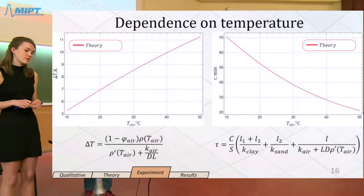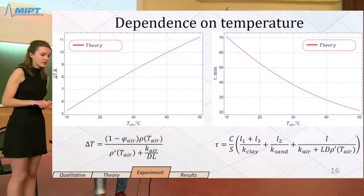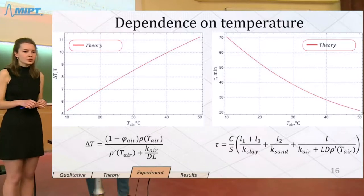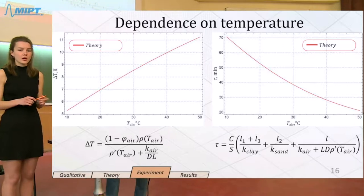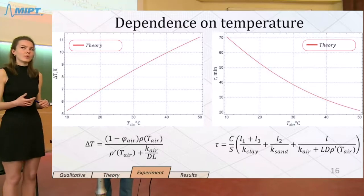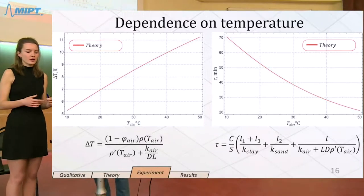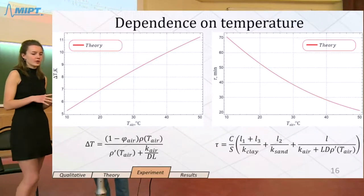Unfortunately, we could not vary air temperature, but we've plotted theoretical graphics of temperature difference dependence on air temperature and parameter tau. As you can see, the higher air temperature is, the bigger temperature difference we can achieve. And we can do that in a smaller period of time.